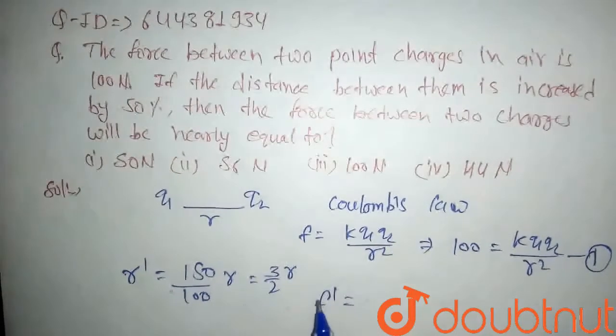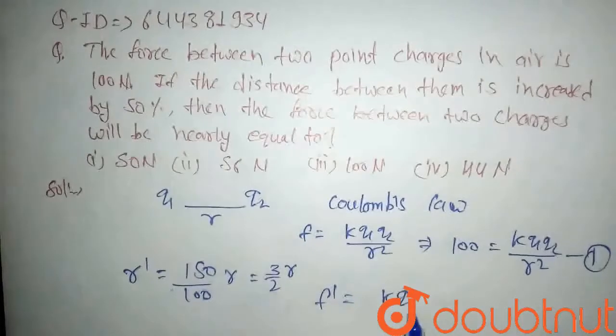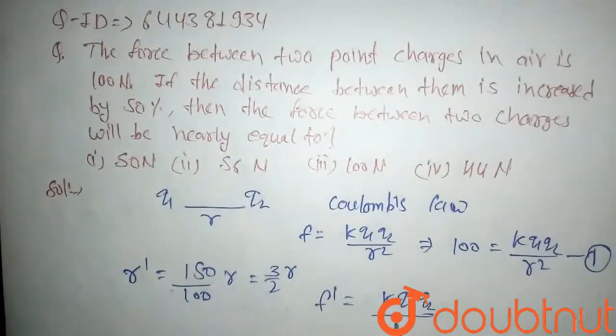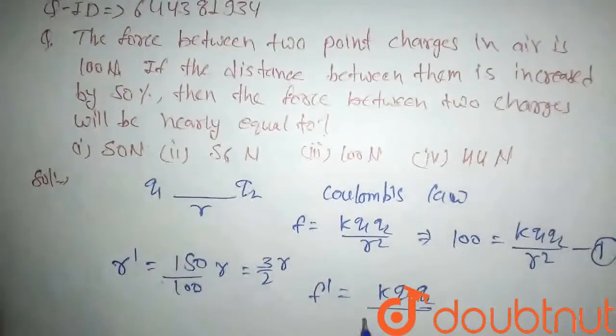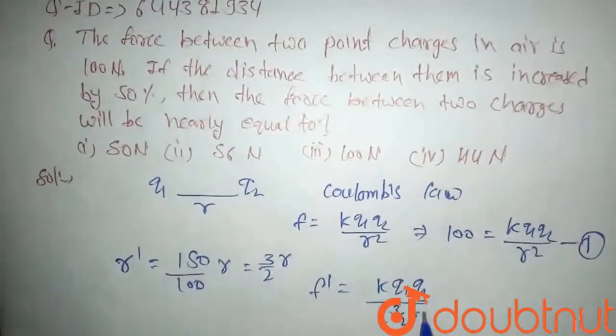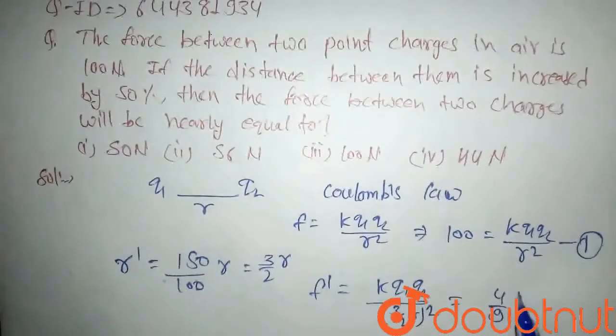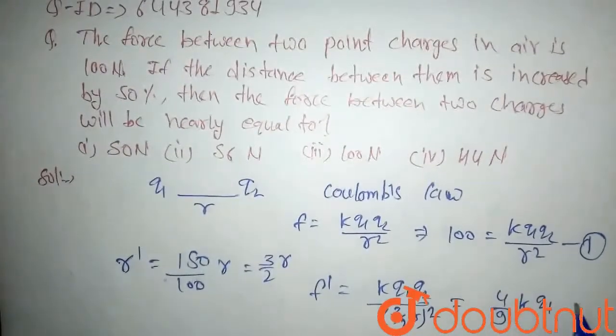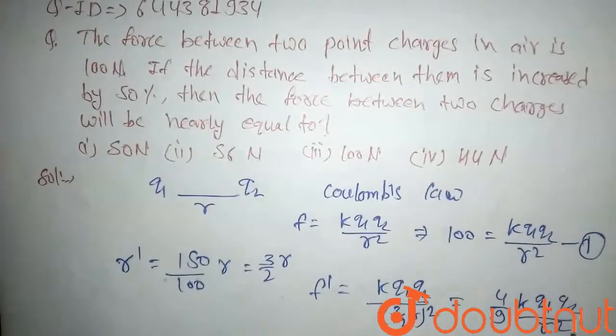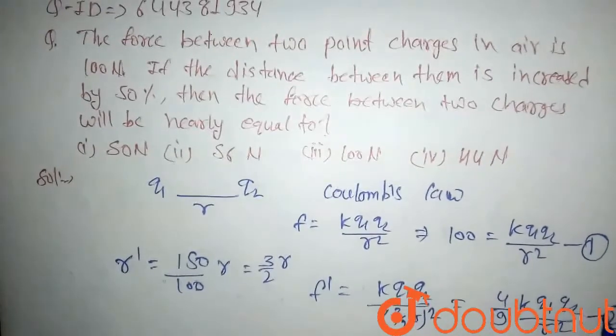Then F dash, the new force, comes out as k q1 q2 upon 3 by 2 r square. So it will be 4 upon 9 k into q1 q2 upon r square. Let's say this is our second equation.